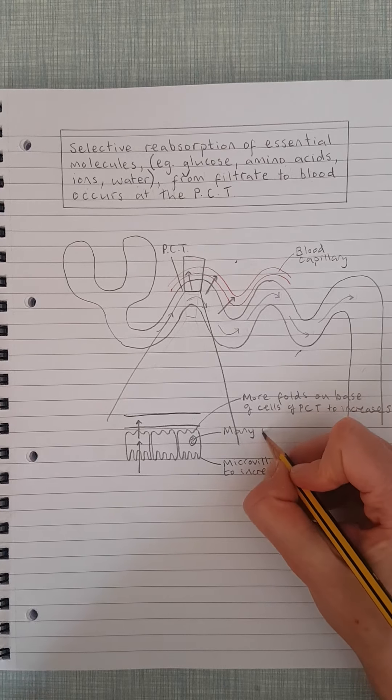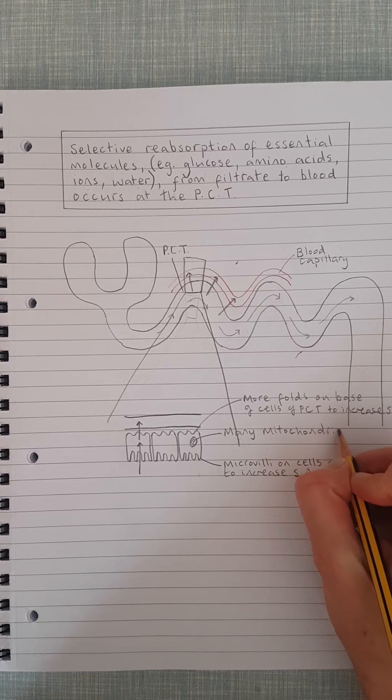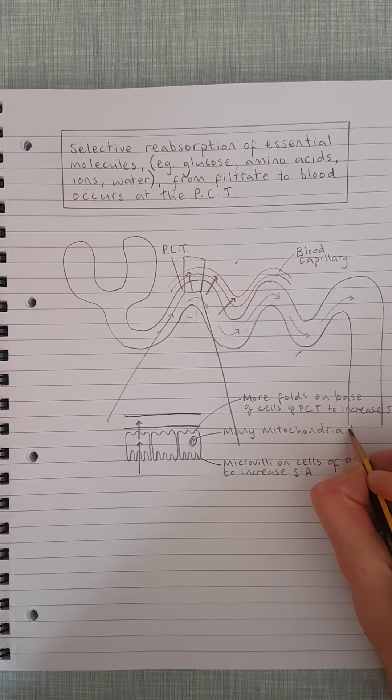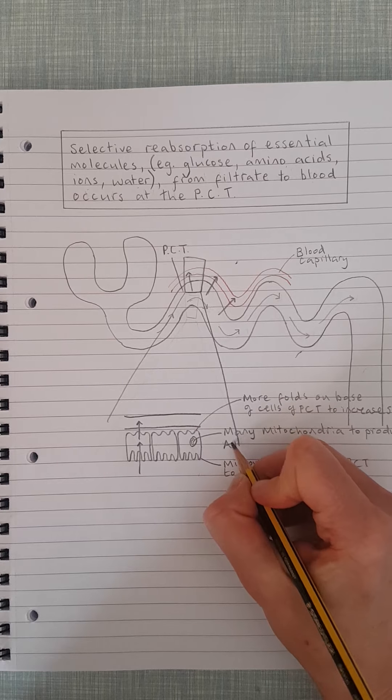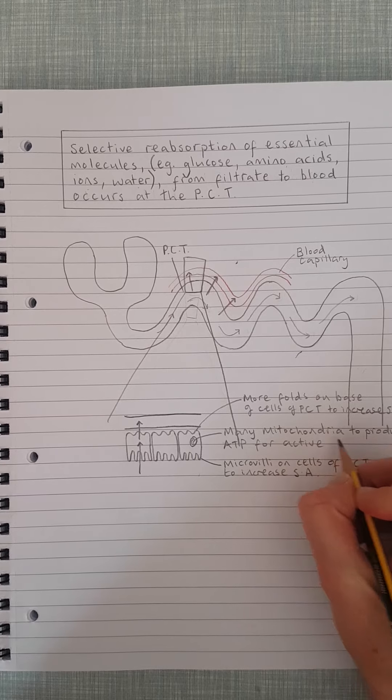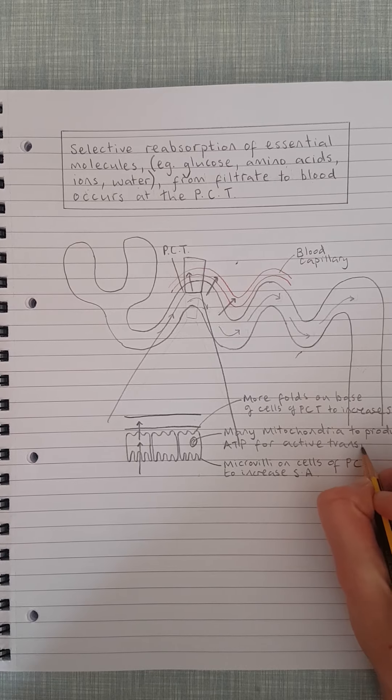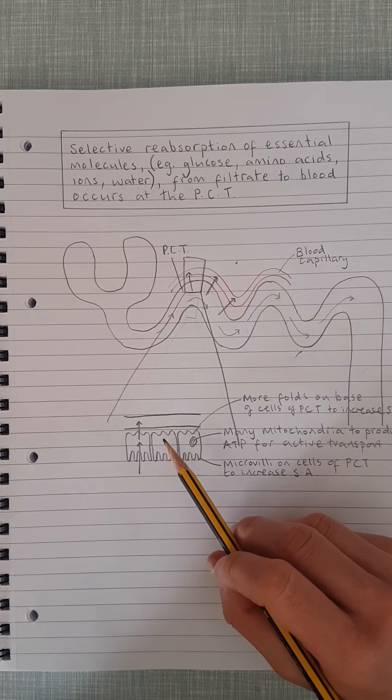Talking of active transport, these cells also have lots and lots of mitochondria to provide the energy for active transport. So let's write that down: many mitochondria to produce ATP from respiration of course. And one of the things that it gets used for here is for active transport.